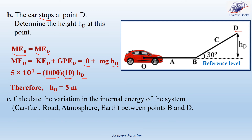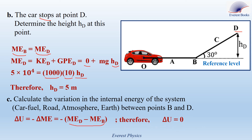Part 3C: Calculate the variation in the internal energy of the system — car, fuel, road, atmosphere — between B and D. Since the system is energy isolated, ΔU = −ΔME = −(MED − MEB). But since mechanical energy is conserved along the incline, MED = MEB. Therefore MED − MEB = 0, and ΔU between B and D equals zero.